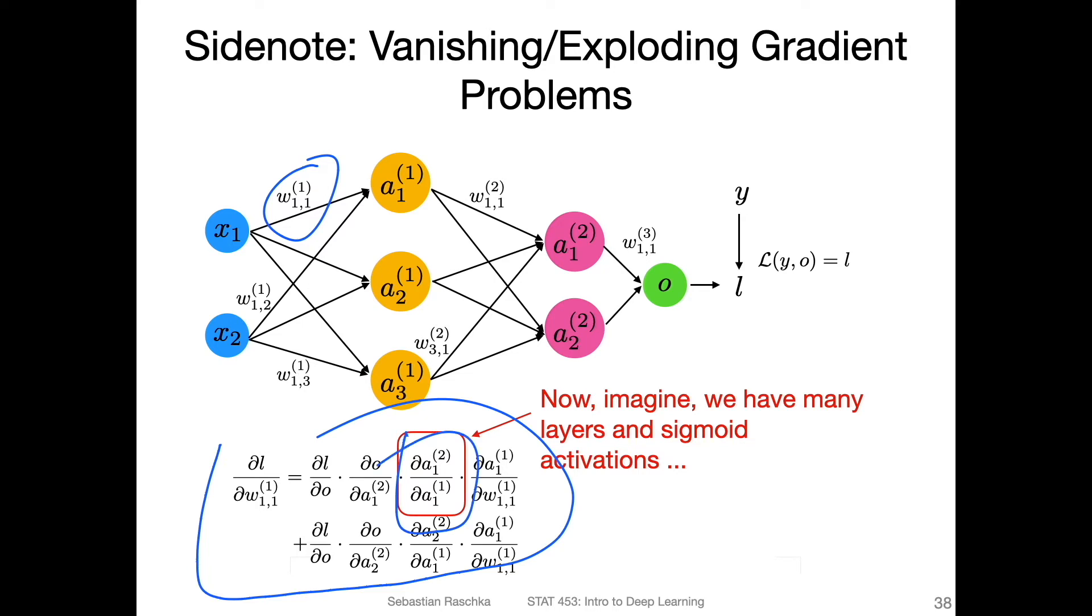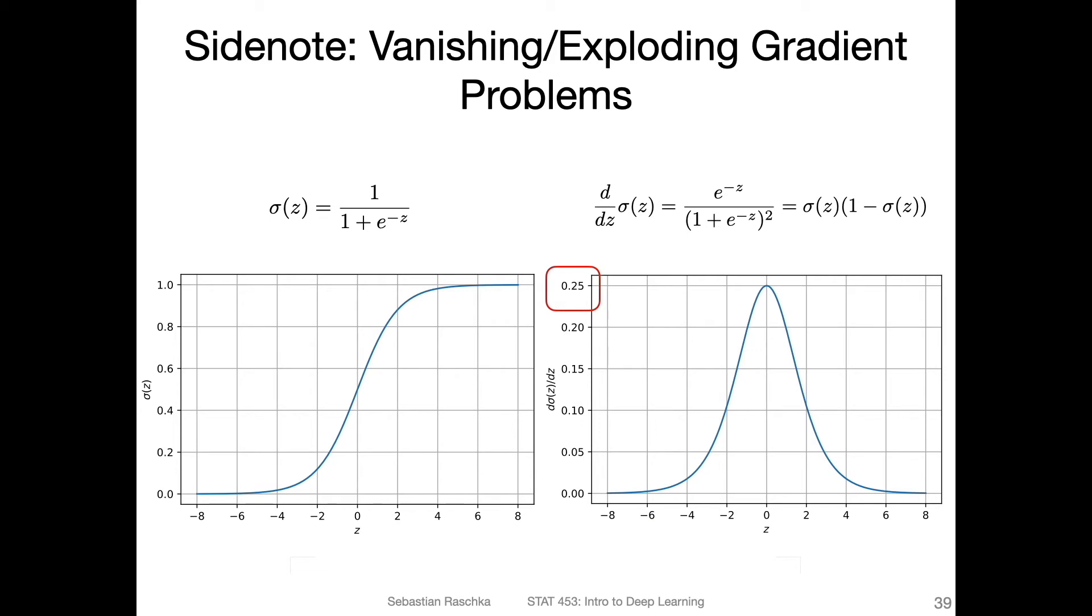But I want you to focus briefly on this part here, where we have the derivative of the activation with respect to the activation in the previous layer. The critical part here is this part where we compute the derivative of the activation with respect to the input, particularly if we have something like the logistic sigmoid. Here's the partial derivative of the logistic sigmoid with respect to its input. The derivative is largest if the input is zero, and even if it's zero, it's just 0.25.